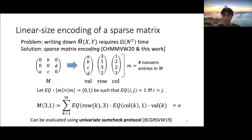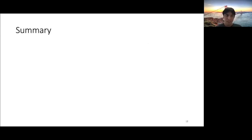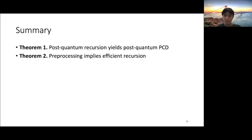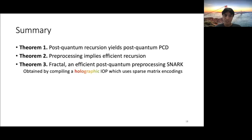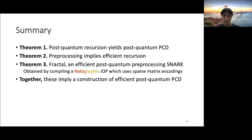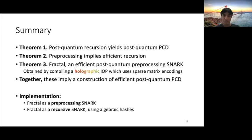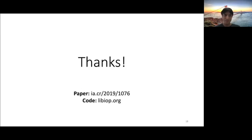This is a quite technical slide. Now I want to take a second to zoom out and summarize what I've talked about. So we showed that post-quantum recursion yields post-quantum PCD. We also show that preprocessing implies efficient recursion. And then we construct an efficient post-quantum preprocessing SNARK called Fractal. And the way you construct Fractal was by compiling a holographic IOP that uses sparse matrix encodings for holography. And now together, combining all of these, we get a construction of efficient post-quantum PCD. And as an implementation, we provide Fractal as a preprocessing SNARK and Fractal as a recursive SNARK that uses algebraic hashes. Thank you for your time. The paper and code are both online at these links. Thank you.